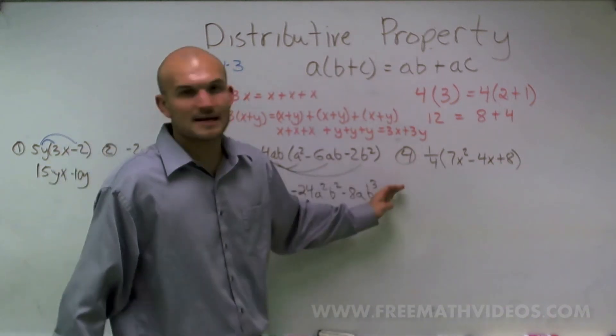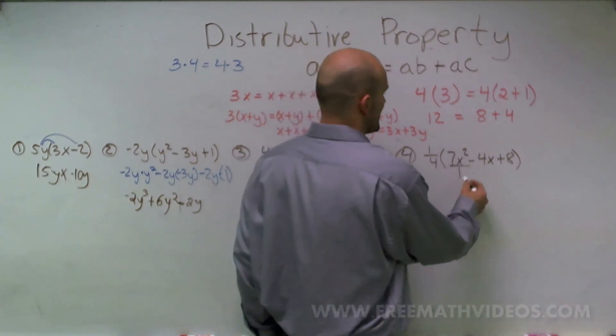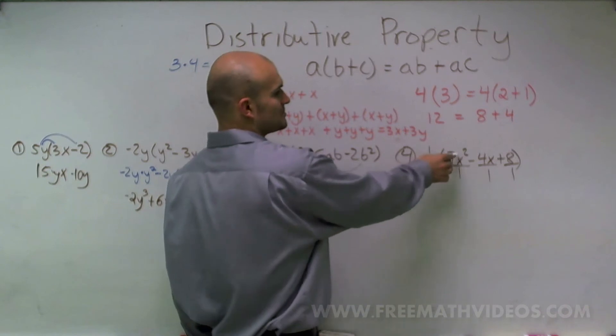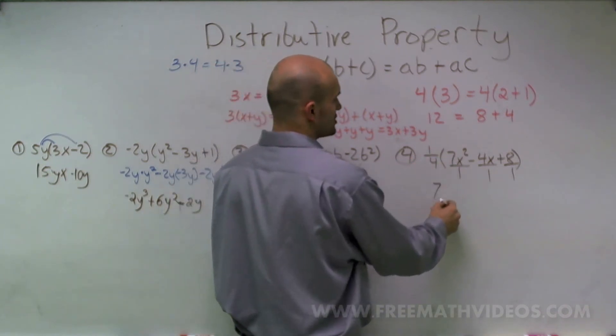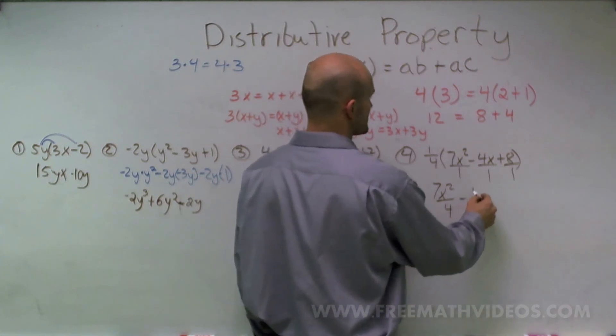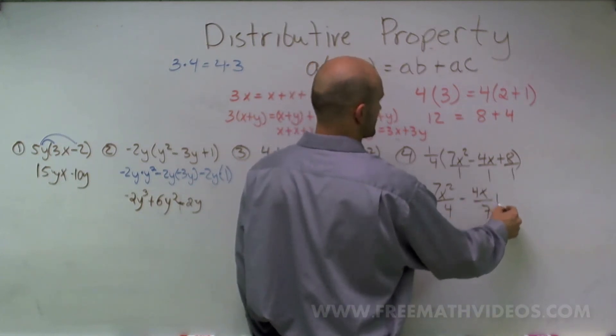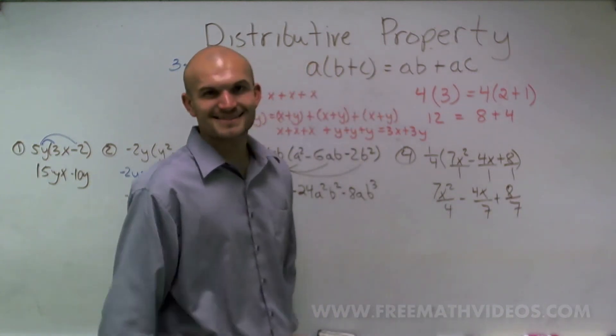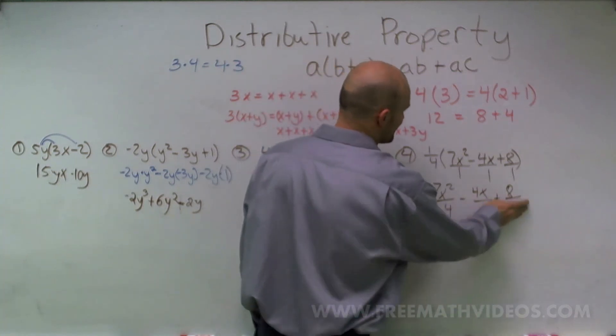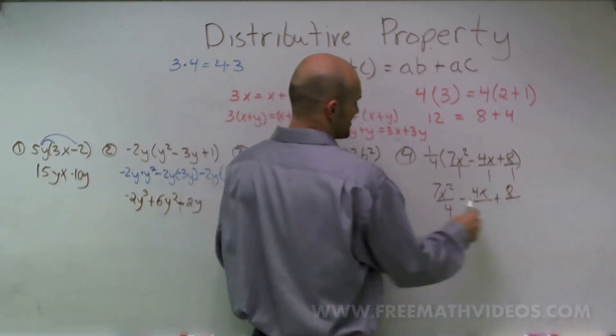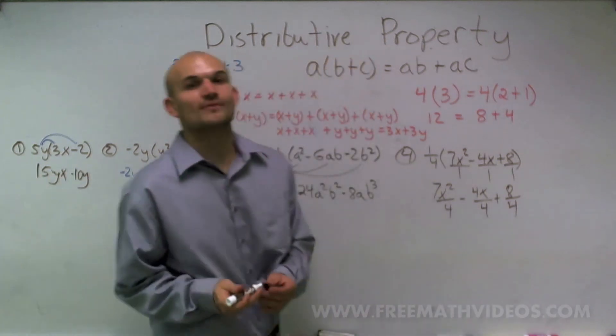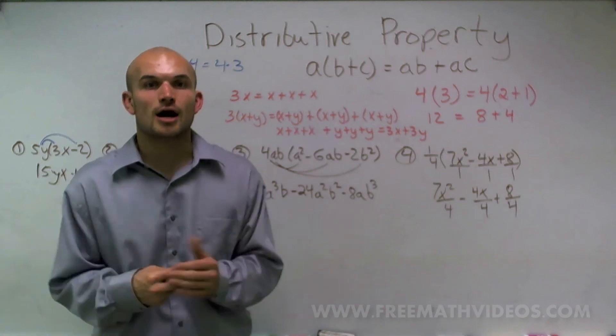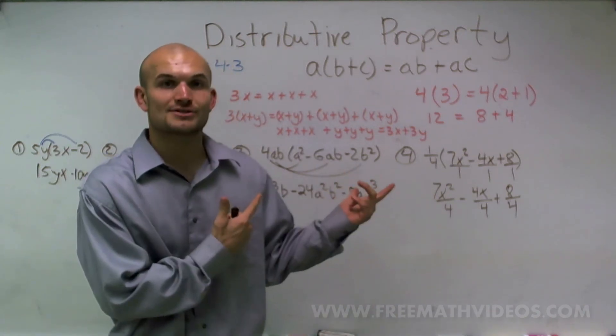Lastly, again, it's the same thing. Just distribute your 1/4. These all do not have denominators, so I can make them as a denominator of 1. So you multiply your numerator times your numerator, your denominator times your denominator. So you obtain 7x squared over 4 minus 4x over 4 plus 8 over 4. Where did I get 7? How about our denominator was 4. Okay. Well, ladies and gentlemen, that is how you use your distributive property. I hope this process helped. I hope you got your answers right. If you have any questions, feel free to let me know. But that's your distributive property for you.